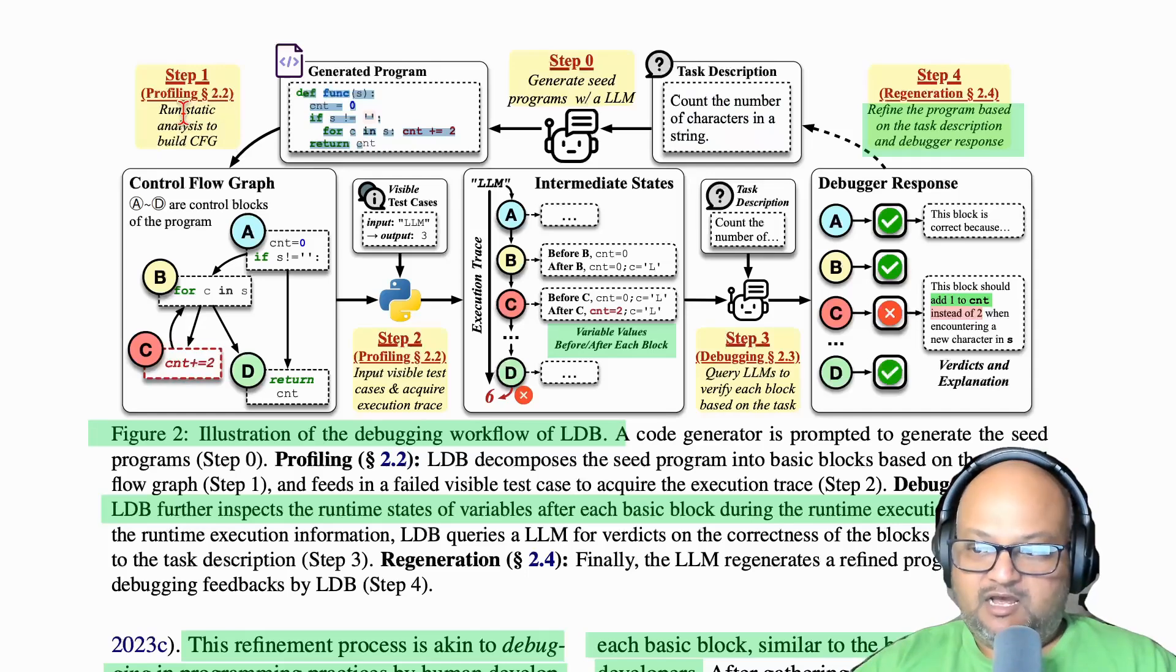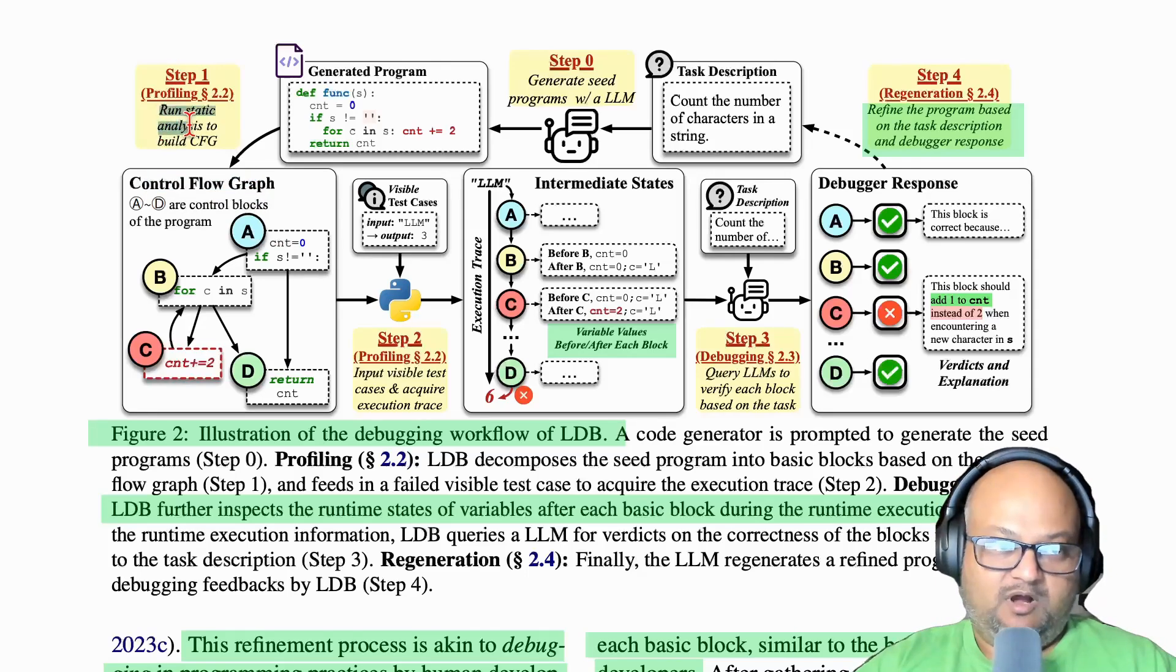Then you have some test cases to run through to check if that code satisfies all your requirements. If it doesn't, then you look at the control flow of your code. This is step one in this process, where you do some static analysis - this doesn't need to be dynamic yet - to simply look at the control flow graph. You can do this purely by looking at the source code without needing to execute it.